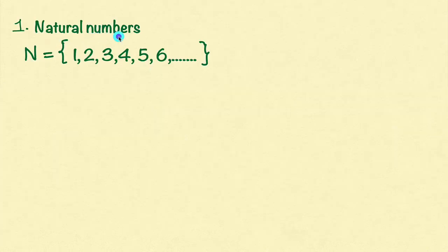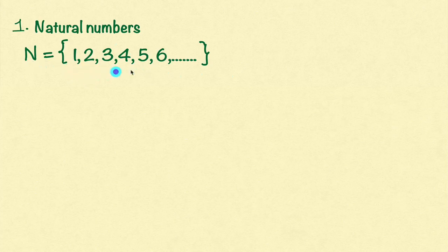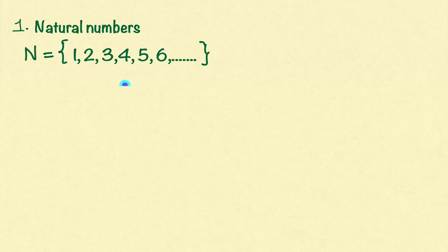Natural numbers — what are natural numbers? Counting numbers are known as natural numbers, like 1, 2, 3, 4, 5, 6 and so on. All these numbers are natural numbers. Natural numbers are denoted by N — capital N, bold letter N. I have written all these numbers in flower brackets to represent a set. In our first PUC, the first chapter is sets, where I will explain more clearly about sets. But here I am using this set notation.